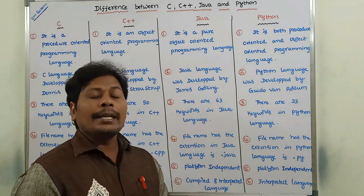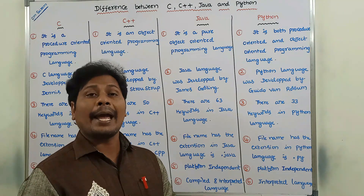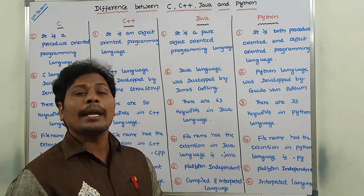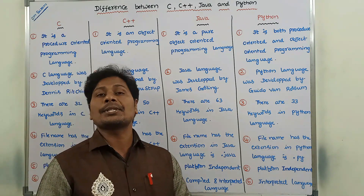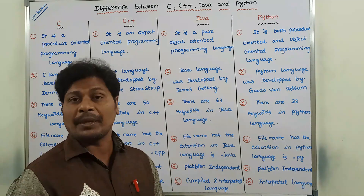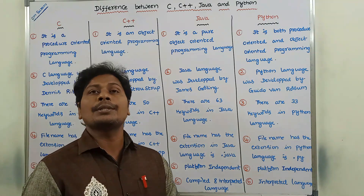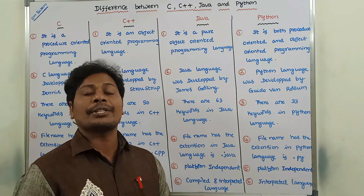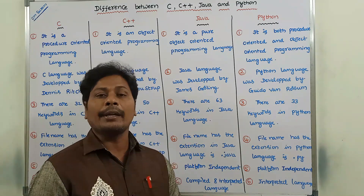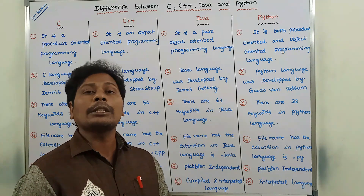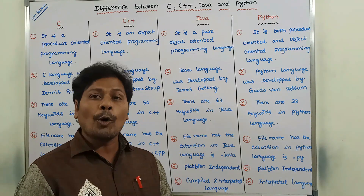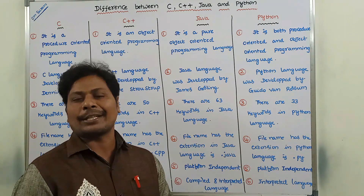Next point: the filename in C language has the extension .c. The filename in C++ language has the extension .cpp. The filename in Java has the extension .java, and the filename in Python has the extension .py. Every language has its own filename extension.